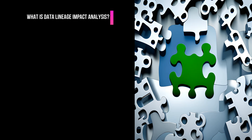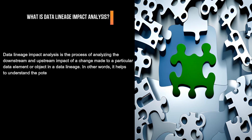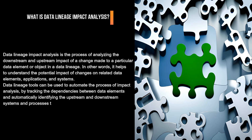What is Data Lineage Impact Analysis? Data Lineage Impact Analysis is the process of analyzing the downstream and upstream impact of a change made to a particular data element or object in a data lineage. In other words, it helps to understand the potential impact of changes on related data elements, applications, and systems. Data Lineage Tools can be used to automate the process of impact analysis by tracking the dependencies between data elements and automatically identifying the upstream and downstream systems and processes that are affected by a change.